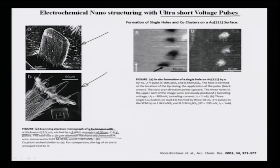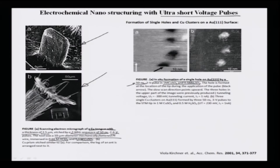This particular machining process used an electrolyte of 0.01 molar HClO₄ and 0.1 molar CuSO₄. Another illustration shows an in-situ formation of a single hole on a gold substrate using a 50 nanosecond voltage pulse of 2 volt magnitude, utilizing 1 molar copper sulphate and 0.5 molar sulphuric acid solutions.